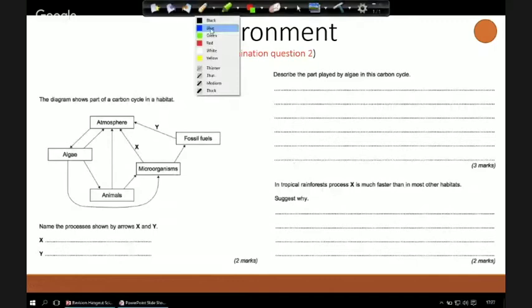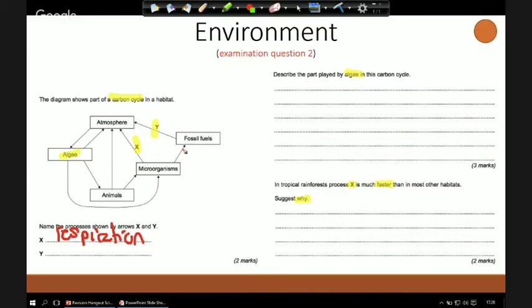Second question. The diagram shows part of the carbon cycle. Name the process shown by the arrows X and Y. Describe the plot played by the algae in the carbon cycle. And finally, in tropical rainforests, process X, whatever that happens to be, is much faster than in most other habitats. Why? Well, X is putting carbon back into the atmosphere and microorganisms are doing it. We're not going to be burning the microorganisms, so this must be respiration. Y is putting carbon dioxide back into the atmosphere, but this is to do with fossil fuels which we are burning. So this will be combustion.